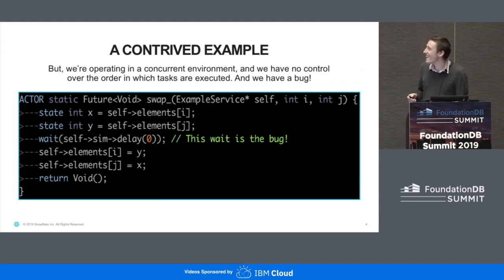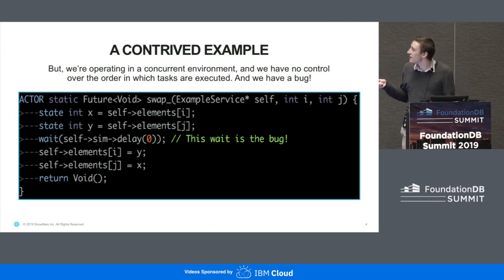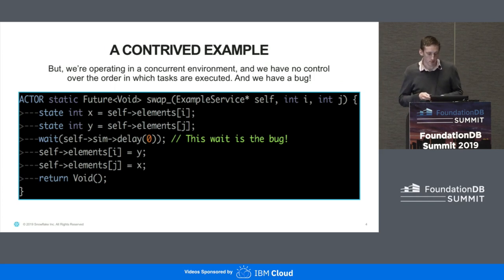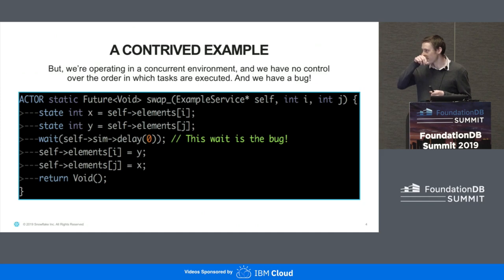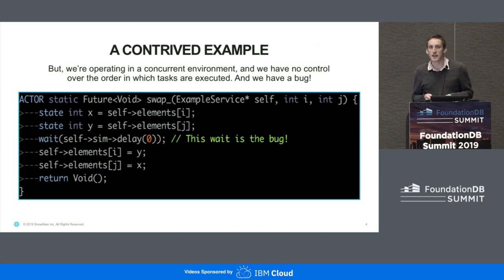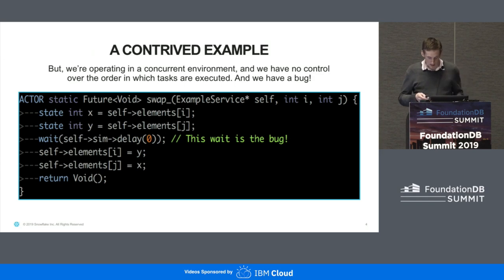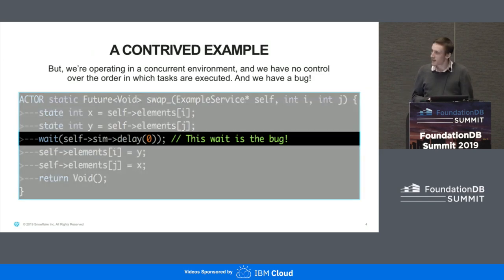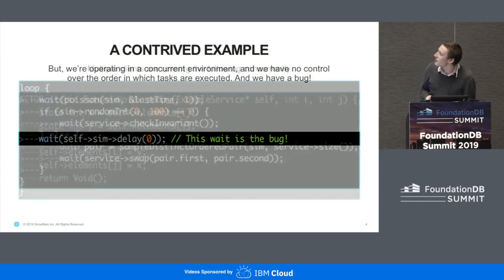Our implementation of this swap is going to have a bug. There are two tasks, so this part can get executed separately after the wait. This looks contrived, but we do really insert wait statements here and there occasionally for things like trying to fix a slow task or lifetime issues. And here's the bug.